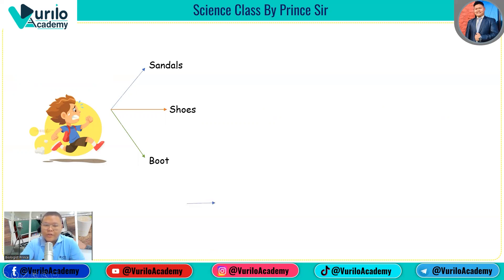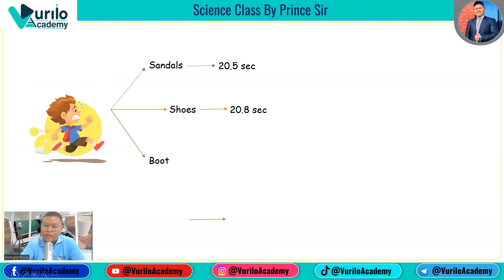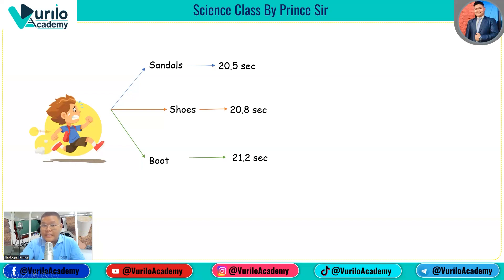First, Ram wore sandals and covered a certain distance in 20.5 seconds. Then with slippers he covered it in 20.8 seconds. Finally with boots he took 21.2 seconds. Observing the results, he found that with sandals he ran fastest, slippers were medium speed, and boots were slowest.